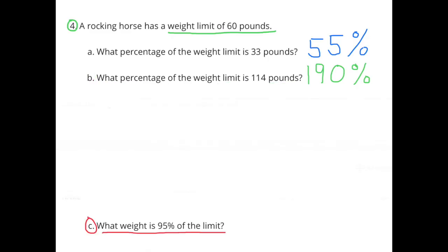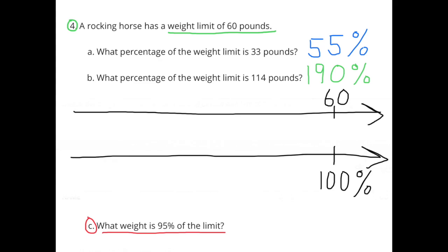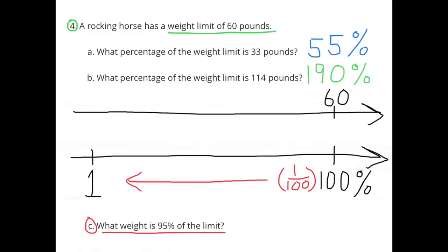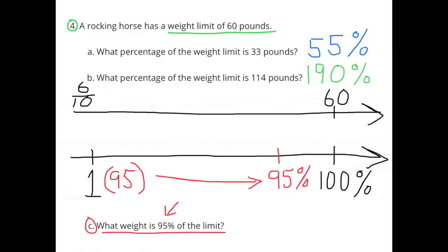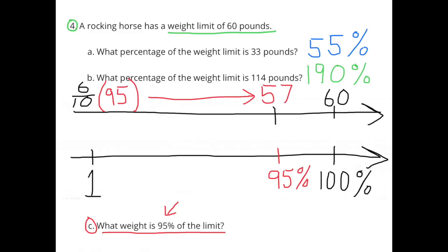C: what weight is 95% of the limit? For problem C, they give us 95% and ask us to find the amount of weight that represents. This time I'll turn 100% into 1%, doing the same to the weight: 60 times one-hundredth equals 60 over 100, or 6 tenths. Now I multiply 1% times 95 to get 95%, and 6 tenths times 95 equals 57 pounds. So 57 pounds is 95% of the 60-pound weight limit.